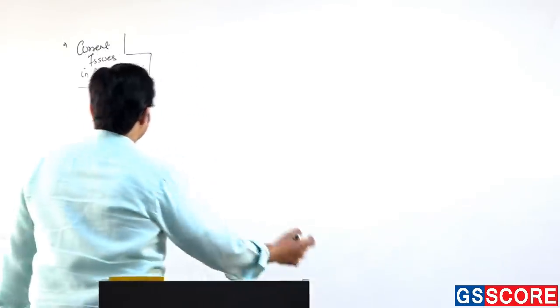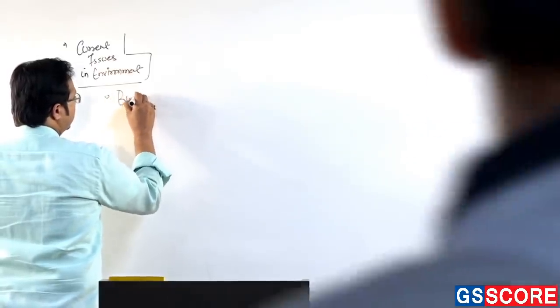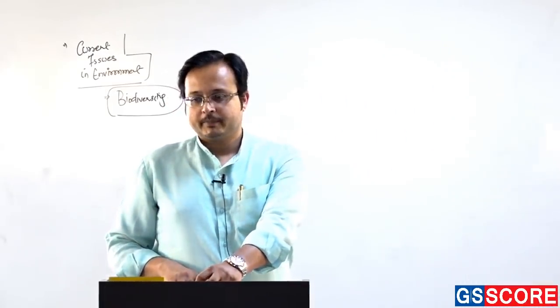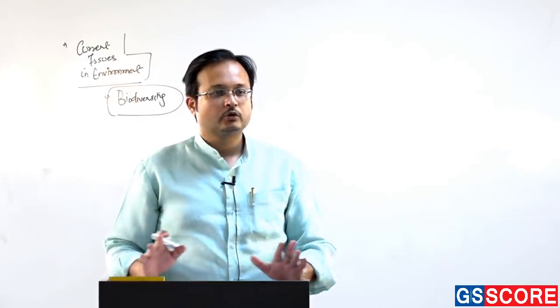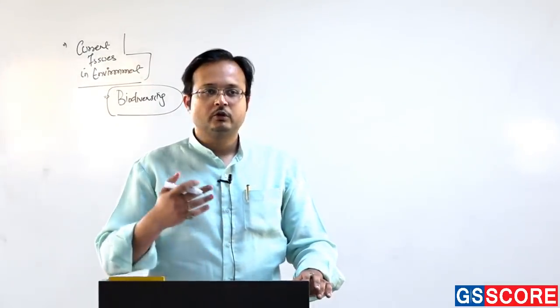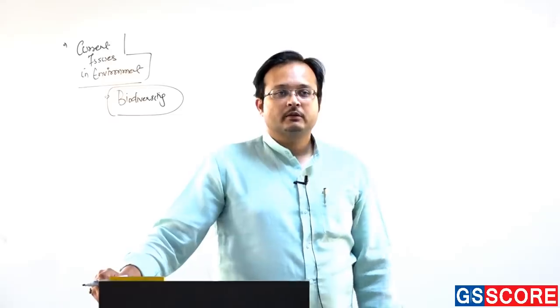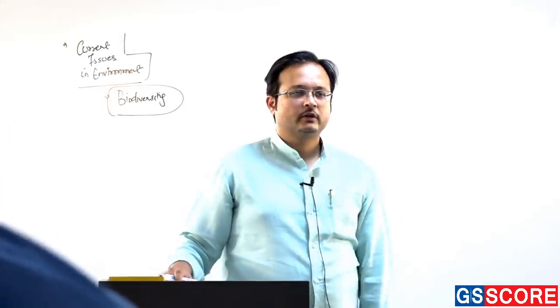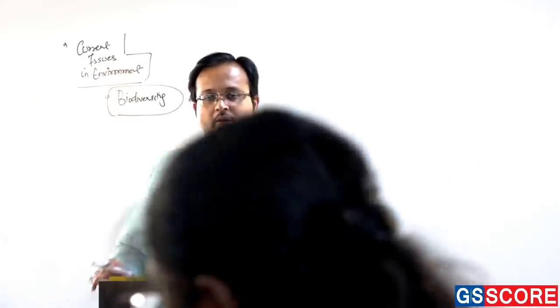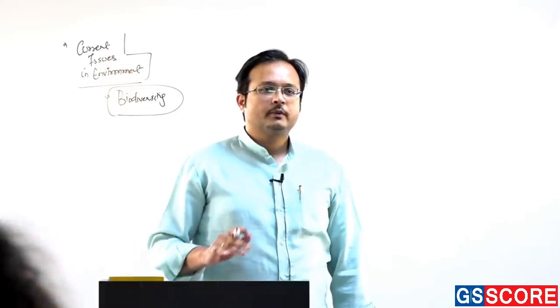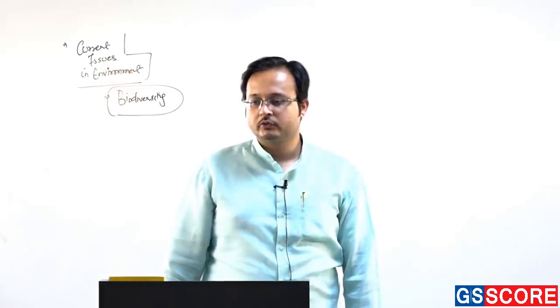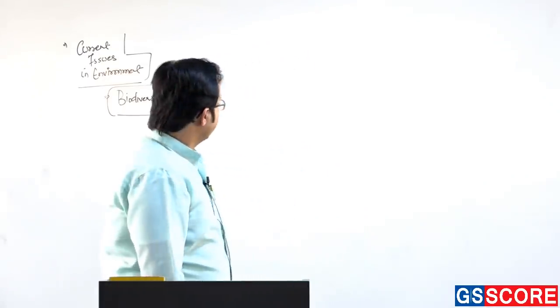The first major issue in biodiversity is the Nilgiri Tahr. Three things are important here: going through the content, identifying the priority issues from current affairs, and understanding what type of questions can be traced out of a particular issue that has been raised.